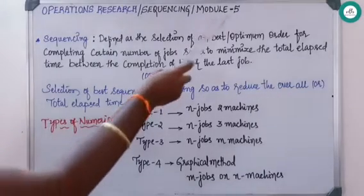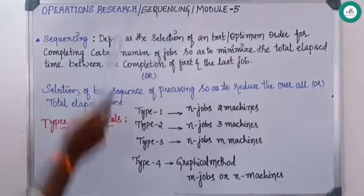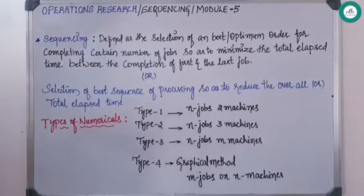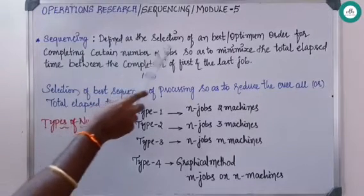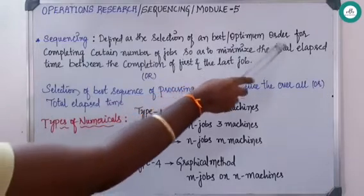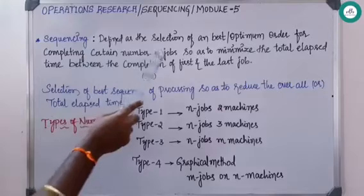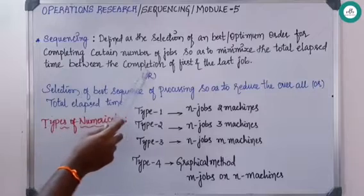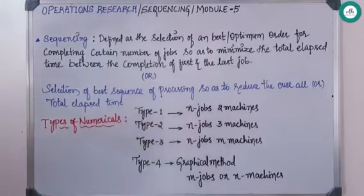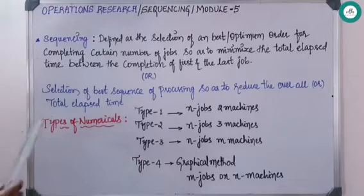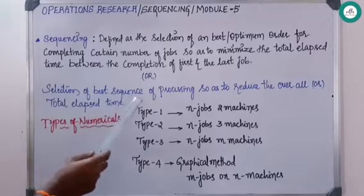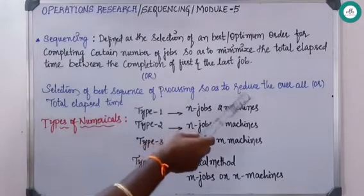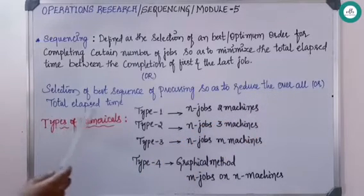Today we will discuss Module 5, that is sequencing in operations research. Sequencing is defined as the selection of the best or optimum order for completing a certain number of jobs, so as to minimize the total elapsed time between the completion of the first and the last job. In simple words, sequencing is the selection of the best sequence of processing so as to reduce the overall time or total elapsed time.